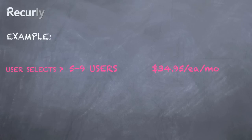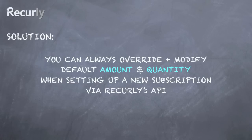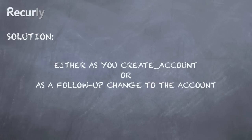This is, of course, an example that requires the use of Recurly's API. When a user signs up, you can always override the amount and quantity for any given subscription plan. This can happen immediately upon account creation, or as an immediate follow-up change to the account to modify the amount and quantity.